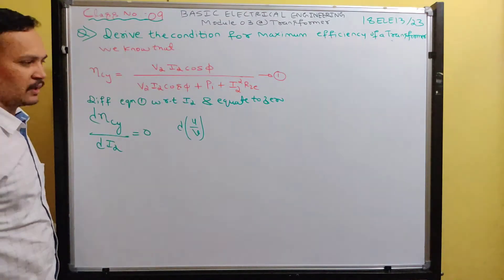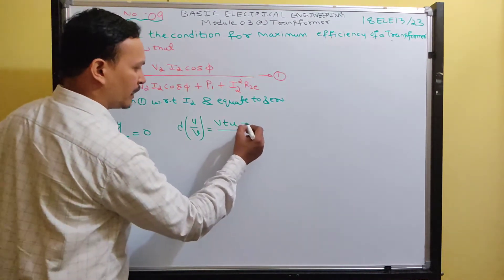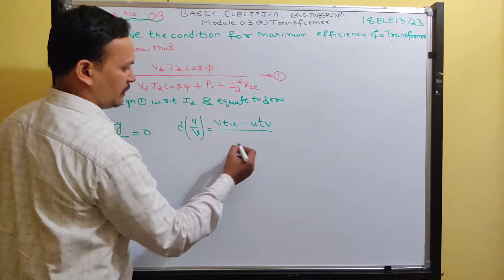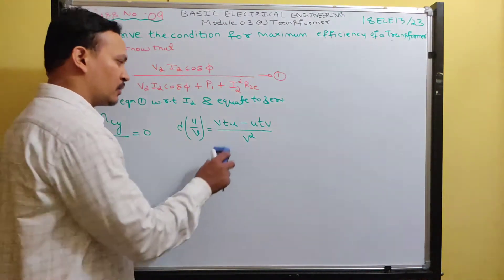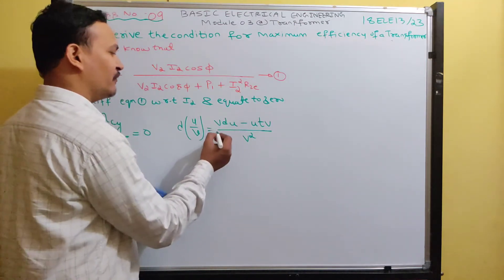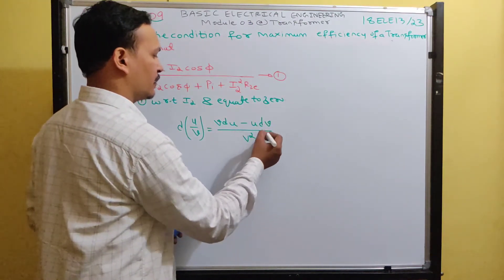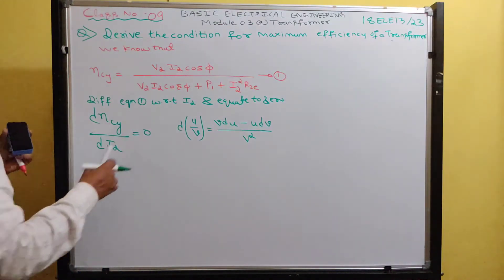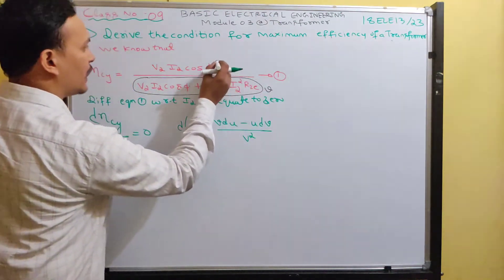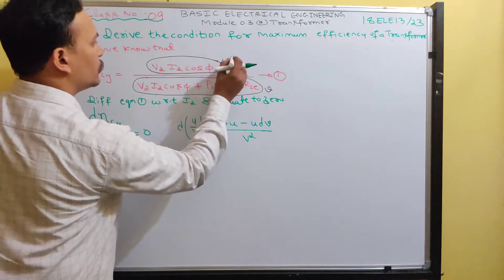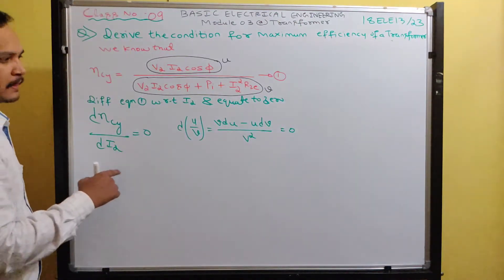The quotient rule formula is: V·dU minus U·dV, divided by V². Apply this formula here and equate to zero. So the numerator after applying the quotient rule is: (V2·I2·cos φ + Pi + I2²·R2e) into d(V2·I2·cos φ) minus (V2·I2·cos φ) into d(V2·I2·cos φ + Pi + I2²·R2e), divided by V², which is (V2·I2·cos φ + Pi + I2²·R2e)², all equated to zero.